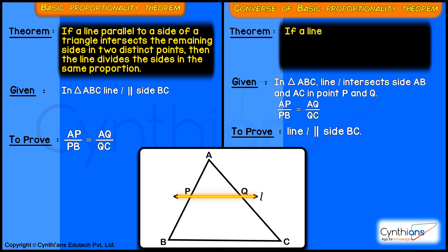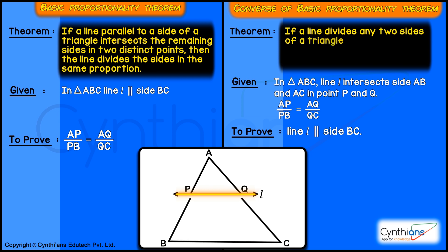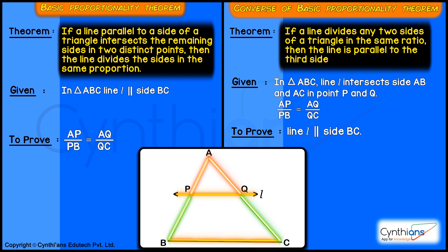If a line divides any two sides of a triangle in the same ratio, then the line is parallel to the third side. We need to prove this: that the line is parallel to the third side. We have been given the ratios.